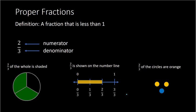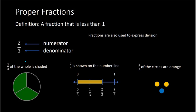Looking at another picture: if we had 3 circles and 2 of them are orange, we can say that 2 thirds of the circles are orange — the fraction represents a portion of the entire quantity of circles. It's also worth noting that fractions are another way to express division. So 2 over 3 is the same thing as 2 divided by 3.